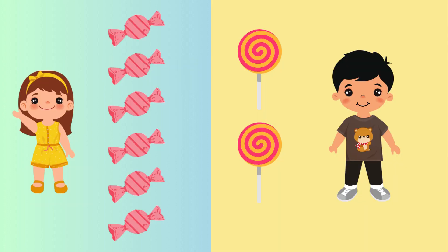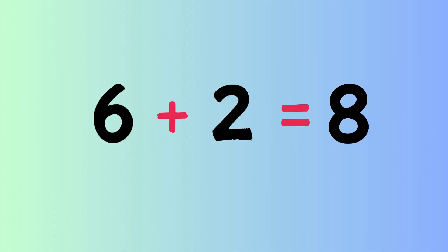Let's have another example. Hannah collected 6 candies and Brandon 2 lollipops. So 6 plus 2 is equal to 8.